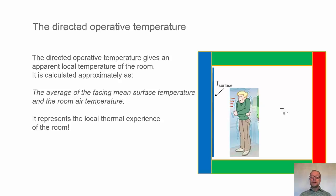But in the picture with the man we see that he might get a net exchange losing energy towards the cold window. We can also define a directed operative temperature. This is the average of the facing mean surface temperature and the room air temperature, so it represents a local thermal experience of the room.